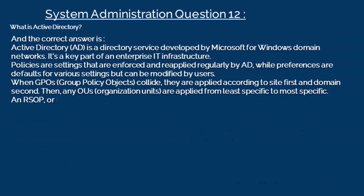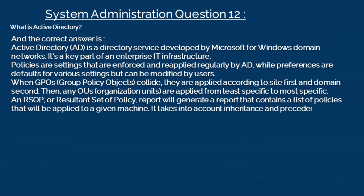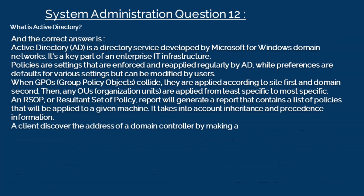An RSOP, or Resultant Set of Policy, report will generate a report that contains a list of policies that will be applied to a given machine. It takes into account inheritance and precedence information.